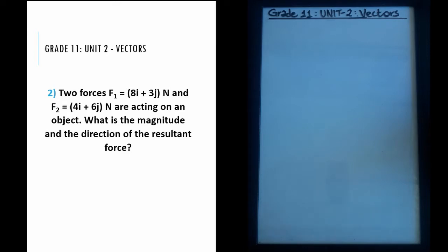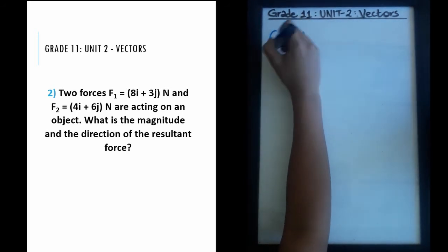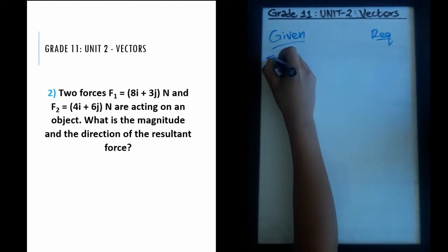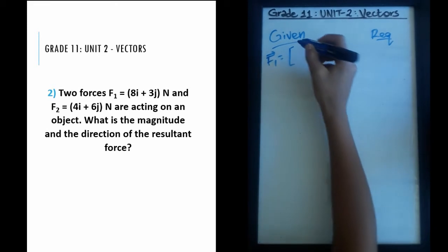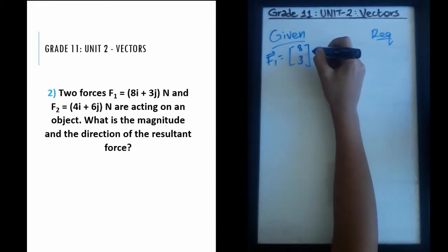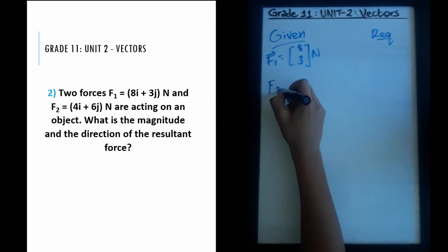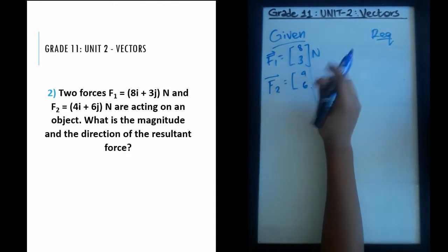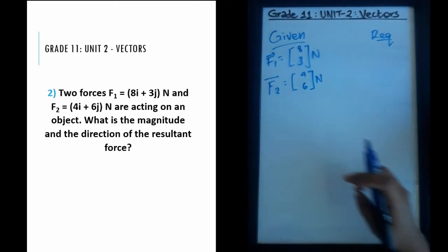This question is about calculations. Whenever you have a physics question with calculations, always write the given first — what the question gives you and what you're required to find. The given in this case: F1 is a vector force which I'll write as (8, 3) — 8 being the x or i value and 3 being the y or j value. Similarly for F2, I'll write (4, 6) Newtons.